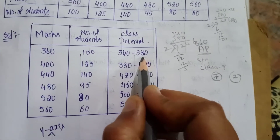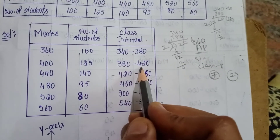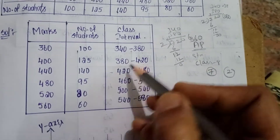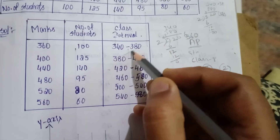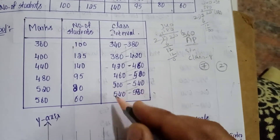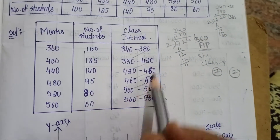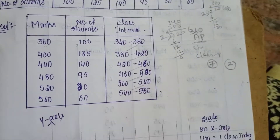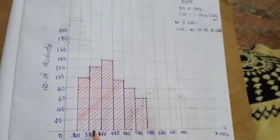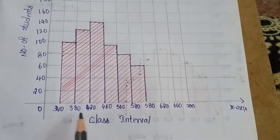The interval is 340 to 380. Then 380 to 420. The difference between intervals is 40. The x-axis starts at 340.